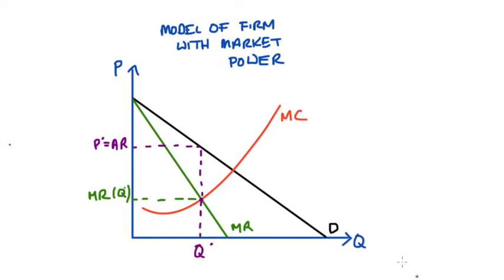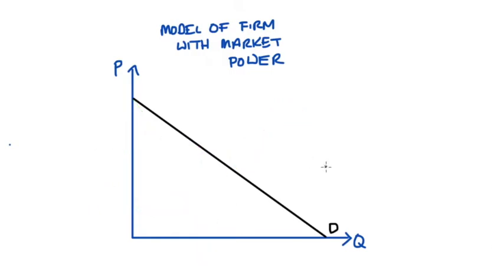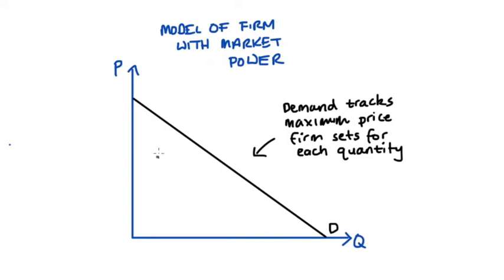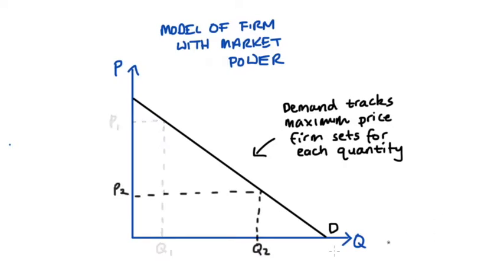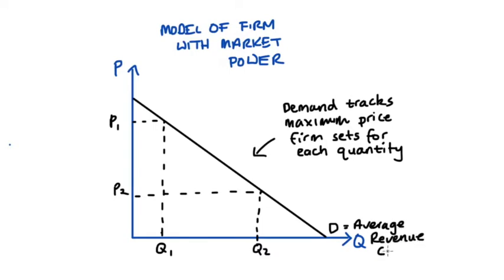Our demand curve, amongst other things, tracks the maximum price that the firm will set for the quantity that they choose to produce. So for instance, if the firm wants to set this quantity, they will sell that quantity for this price here. If they set quantity Q2, they will sell for this price here — they just read the price off the demand curve. As we saw before, the price is equal to our average revenue. So it follows that the demand curve not only tracks the price for various levels of production, but it also tracks the average revenue. That's why the demand curve is equal to the average revenue curve.